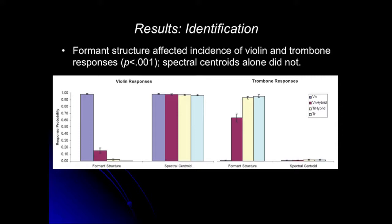For identification: when listeners are asked to label these things, they completely follow the formant structure. You see systematic changes for anything labeled formant structure as you go from one end of the manipulation to the other. Whereas spectral centroid just levels off — a straight line. Even though we're changing the centroid to be more consistent with a different instrument, it doesn't matter. They still hear it as itself — just like you would hear telephone-filtered speech of a person as their voice, not somebody else's.